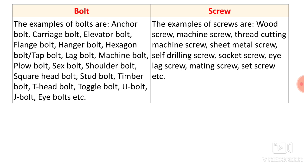The last point covers examples of bolts and screws. Examples of bolts include: anchor bolt, carriage bolt, elevator bolt, flange bolt, hanger bolt, hexagon bolt, lag bolt, machine bolt, plow bolt, sex bolt, shoulder bolt, square head bolt, stud bolt, timber bolt, T-head bolt, toggle bolt, U-bolt, J-bolt, and eye bolt. Different types of screws include: wood screw, machine screw, thread-cutting machine screw, sheet metal screw, self-driving screw, socket screw, hex screw, mating screw, set screw, and more.